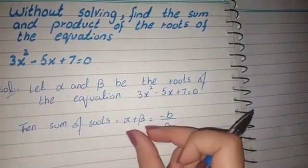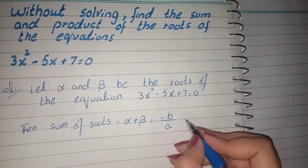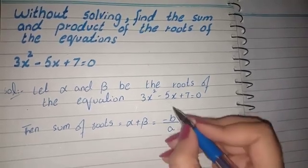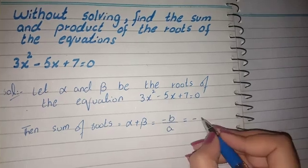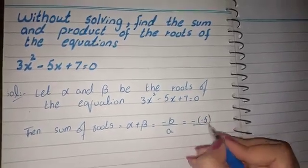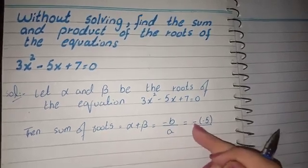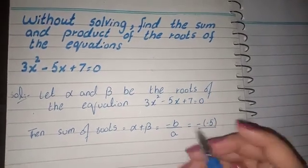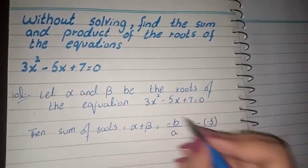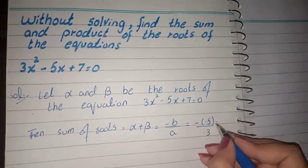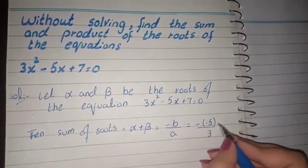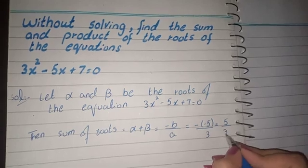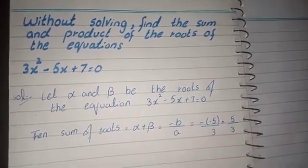Sum of roots: alpha plus beta equals minus b by a. Minus b, we have minus here in bracket, by 3. Minus and minus becomes positive. Sum of roots for this equation is 5 by 3.